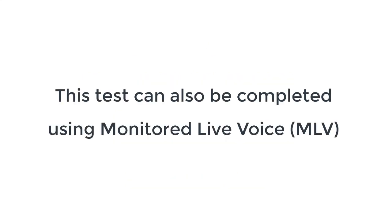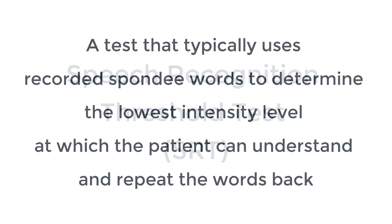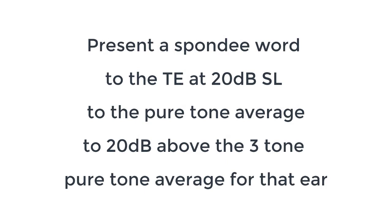The next type of speech testing is called the Speech Recognition Threshold test, or the SRT. This is also a test that typically uses recorded spondee words to determine the lowest intensity level at which the patient can understand and repeat the words back. You want to present a spondee word to the test ear at 20 dB SL to the pure tone average — 20 decibels above the three-tone pure tone average for that ear.